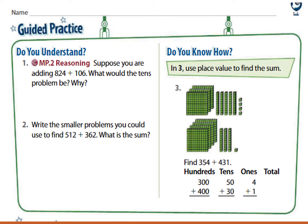Now open page 939 and follow me. Are you ready? My heroes! Look at question number 1. Suppose you are adding 824 plus 106. What would the tens problem be, and why? He is asking about the tens place, so look at the tens place. In the first addend, 824, how many tens do you have? It's 2 tens, or 20. Check the second addend — it has 0 tens. So 20 plus 0, because there are 2 tens in 824 and 0 tens in 106.